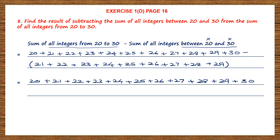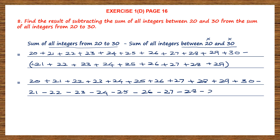Now we are going to open the brackets. Before you open the bracket, see what sign is there before the bracket — the sign is minus. If minus is the sign, then we have to change the sign of all numbers inside the bracket. So plus 21 becomes minus 21, minus 22, minus 23, minus 24, minus 25, minus 26, minus 27, minus 28, and minus 29.